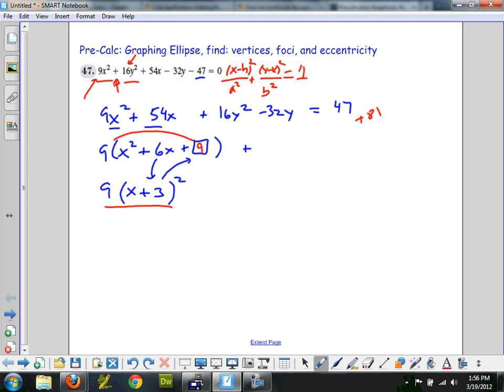Now do the other one. 16 comes out of y squared and 32y, as a negative 2y. I put a little box there to remind me. Half of b, bring down the plus sign. Y minus 1 quantity squared. The square of that is 1, but I'm not really just adding a 1. What am I adding? 16 times 1. So you've got to realize that I'm distributing that 16 over to there. When you take the other side, you've got 47, 81, and 16, equals 144.